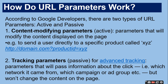Tracking parameters mein aapka content change nahin hota hai. Balki wo kis campaign se aaya hai, kis newsletter se aaya hai, kis group se aaya hai — us pe depend karta hai. Aur iska content change nahin hota hai.